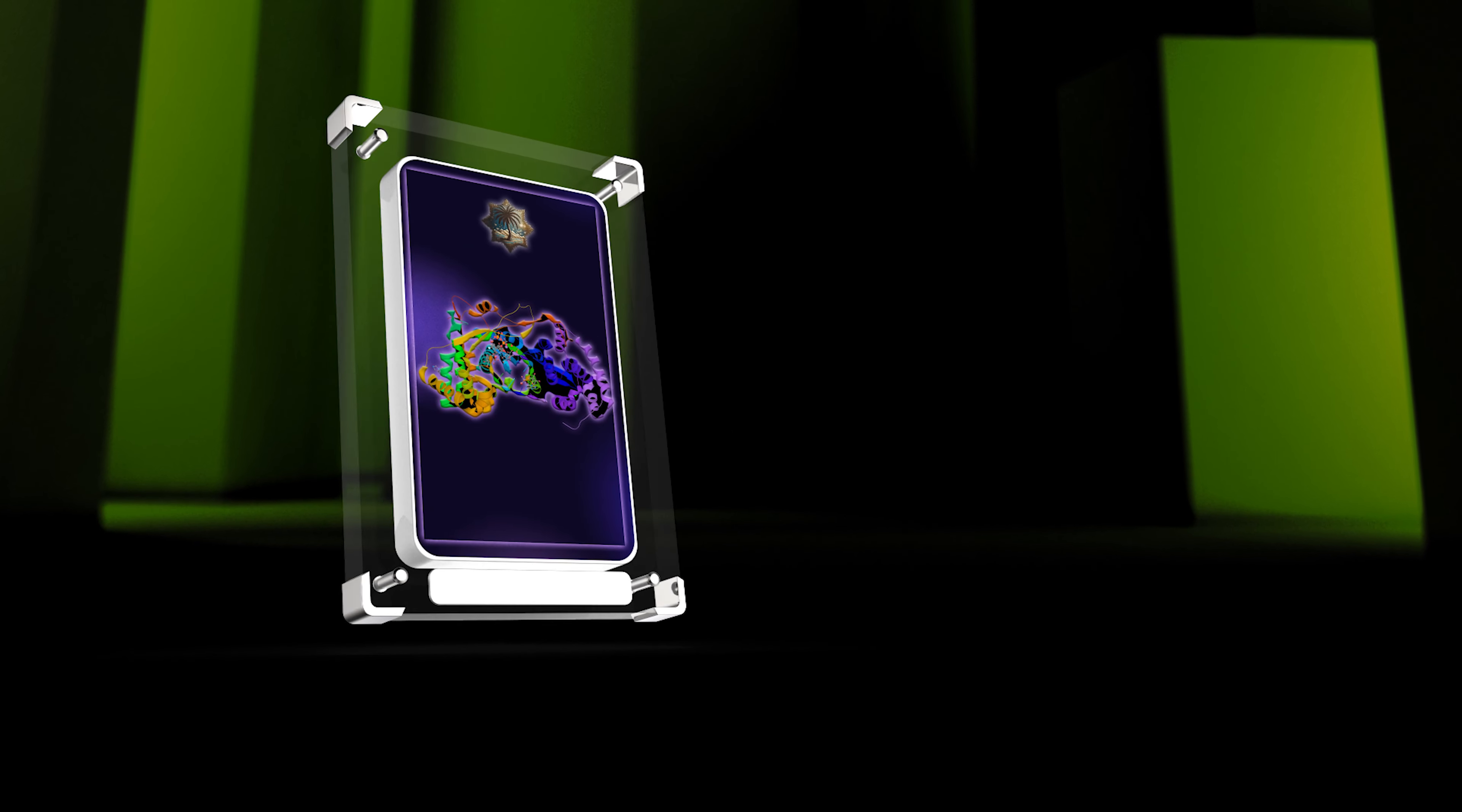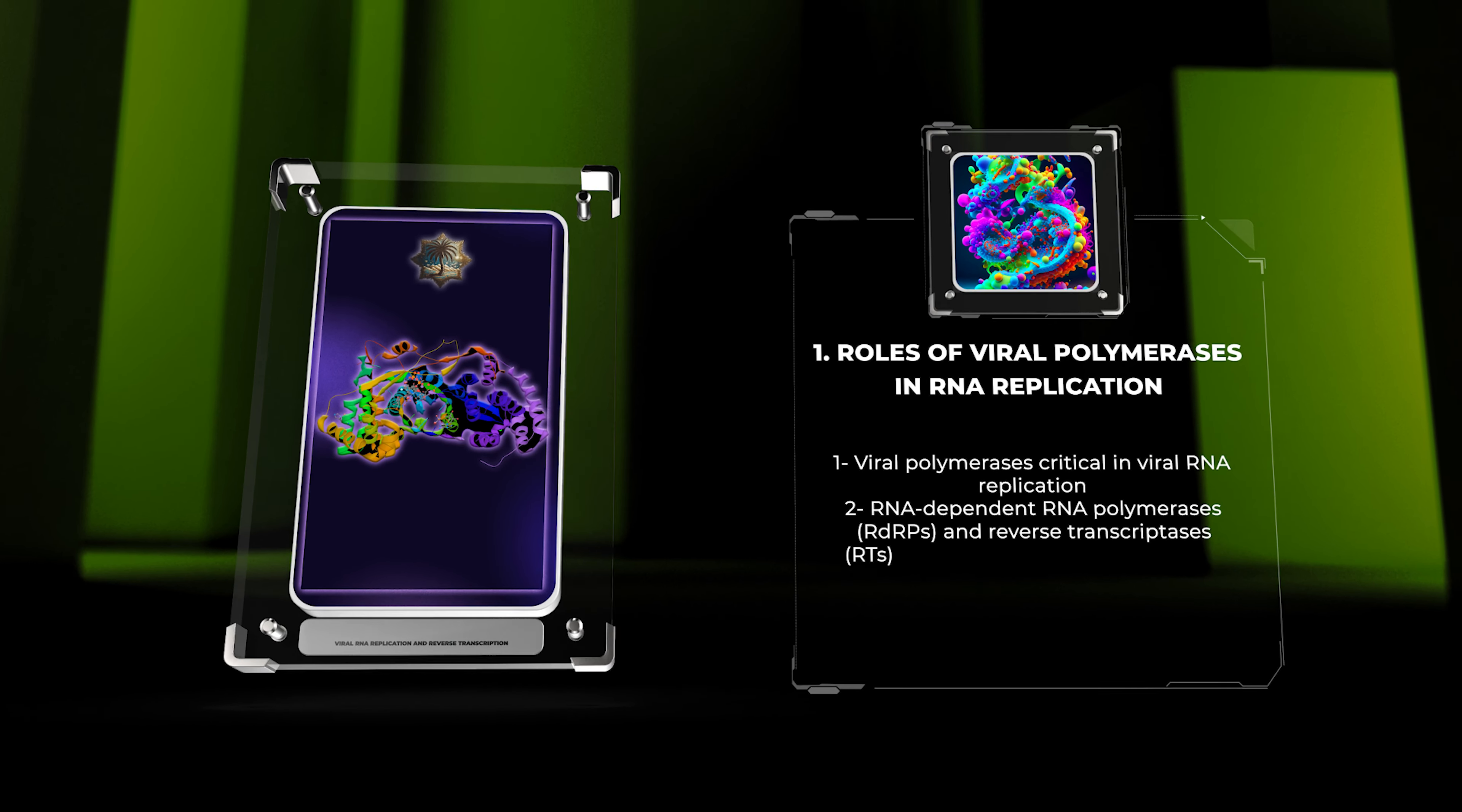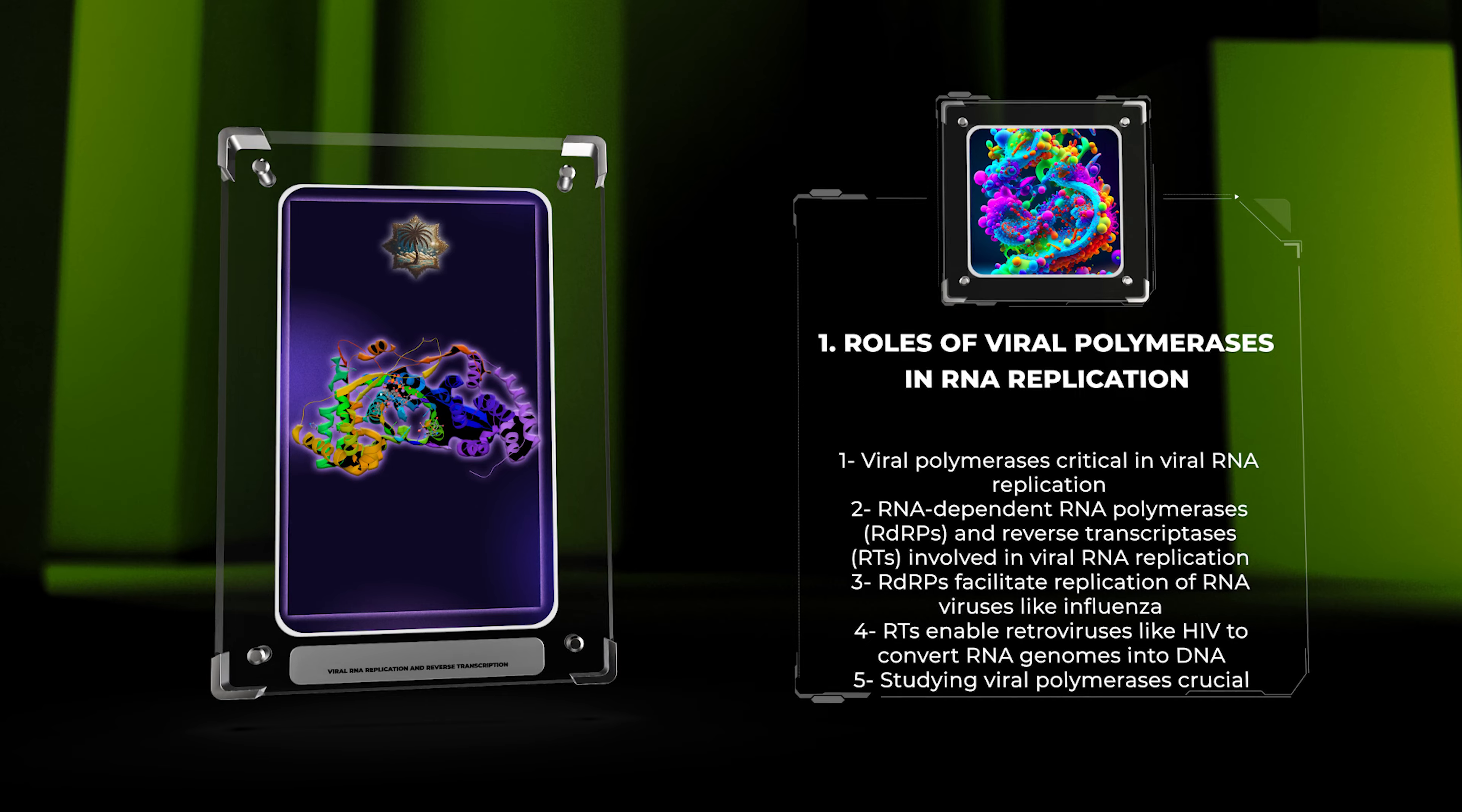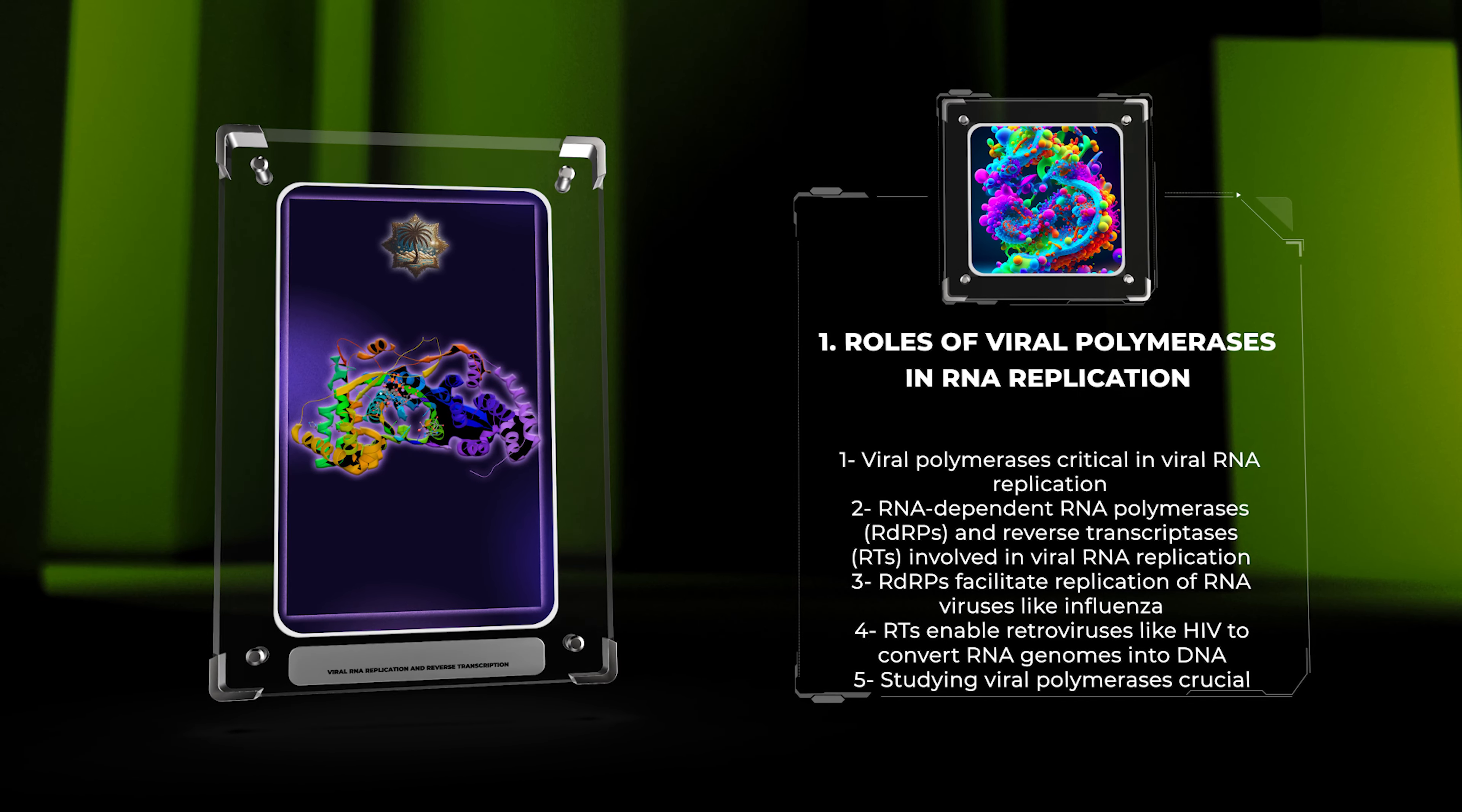In viral RNA replication, viral polymerases play a critical role. These enzymes, such as RNA-dependent RNA polymerases (RDRPs) and reverse transcriptases (RTs), use viral templates to create RNA molecules.